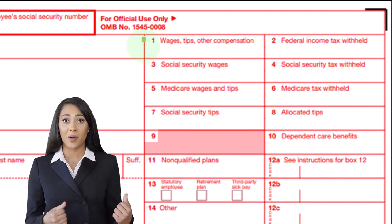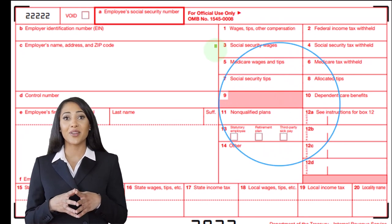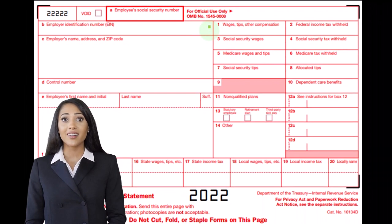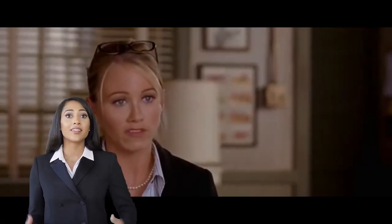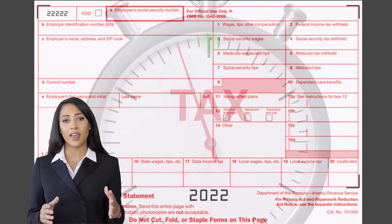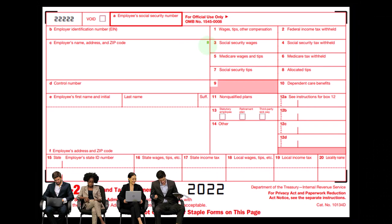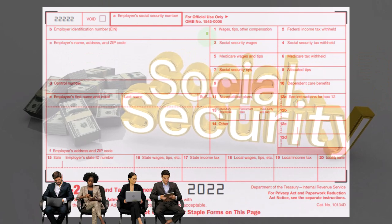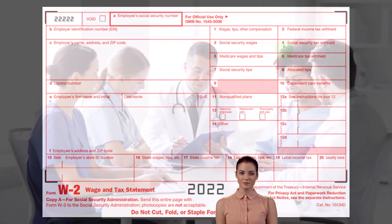Box 3 might be the same number as box 1, but it might be different — for example, if you had items not included as taxable income in box 1 but subject to social security tax. That's one reason you might see a difference. Also, the social security wages might hit the cap, so for high-income earners it's possible the social security wages got capped, making the wages box higher than the social security box. Box 4 is the social security tax that is paid.